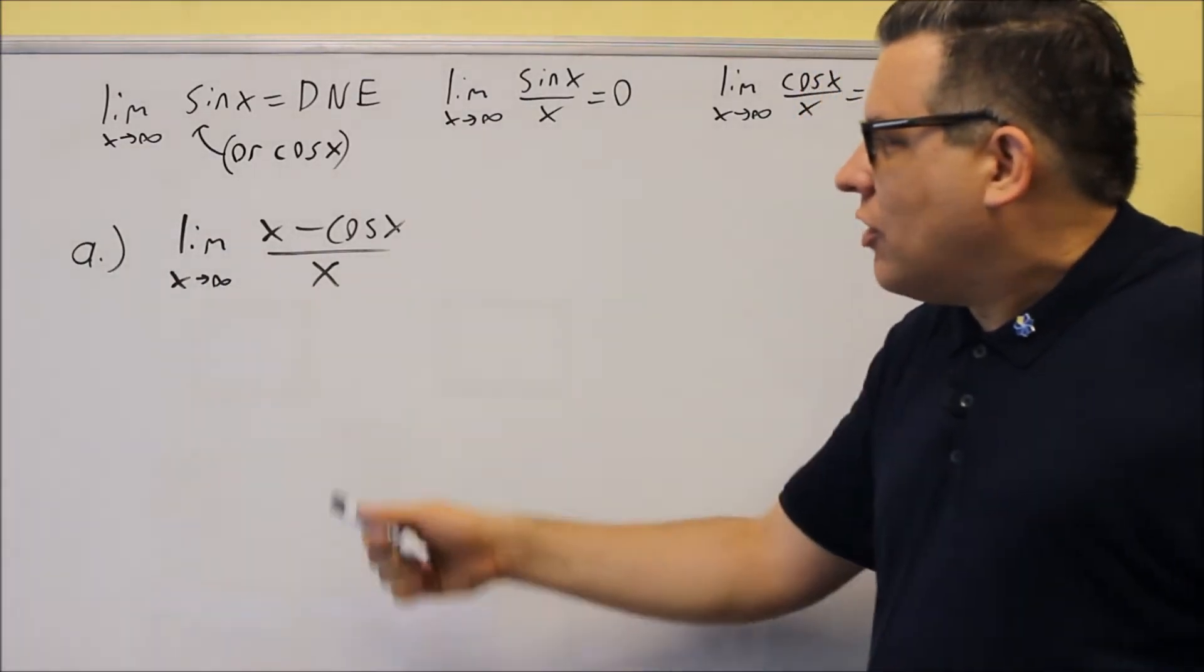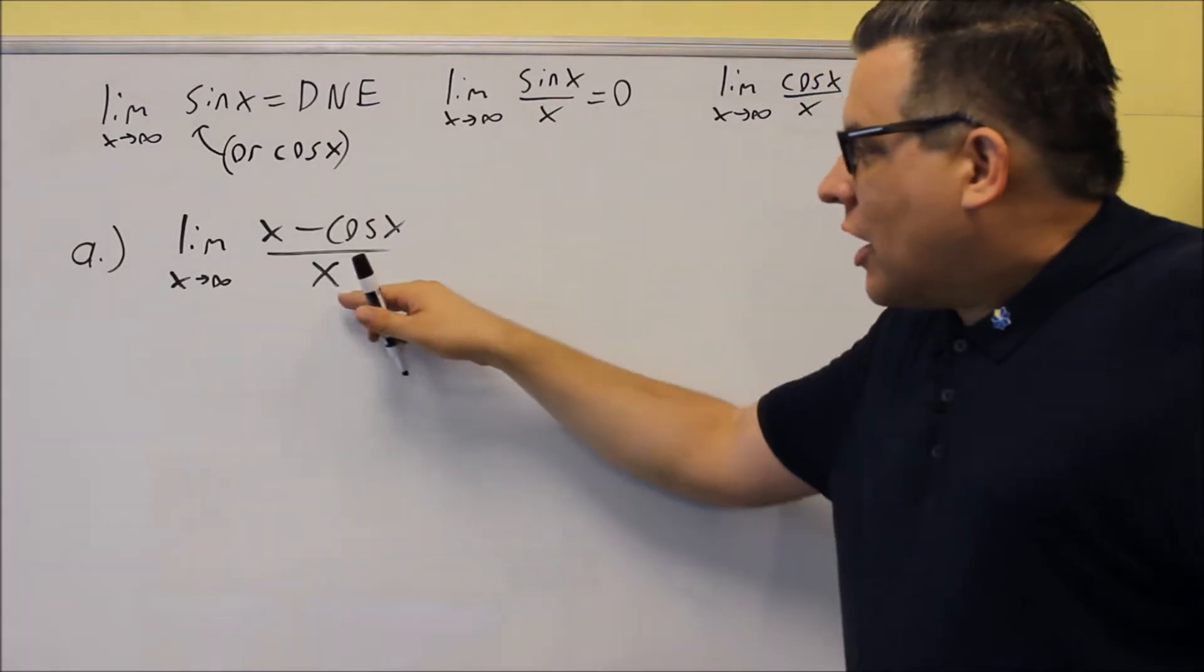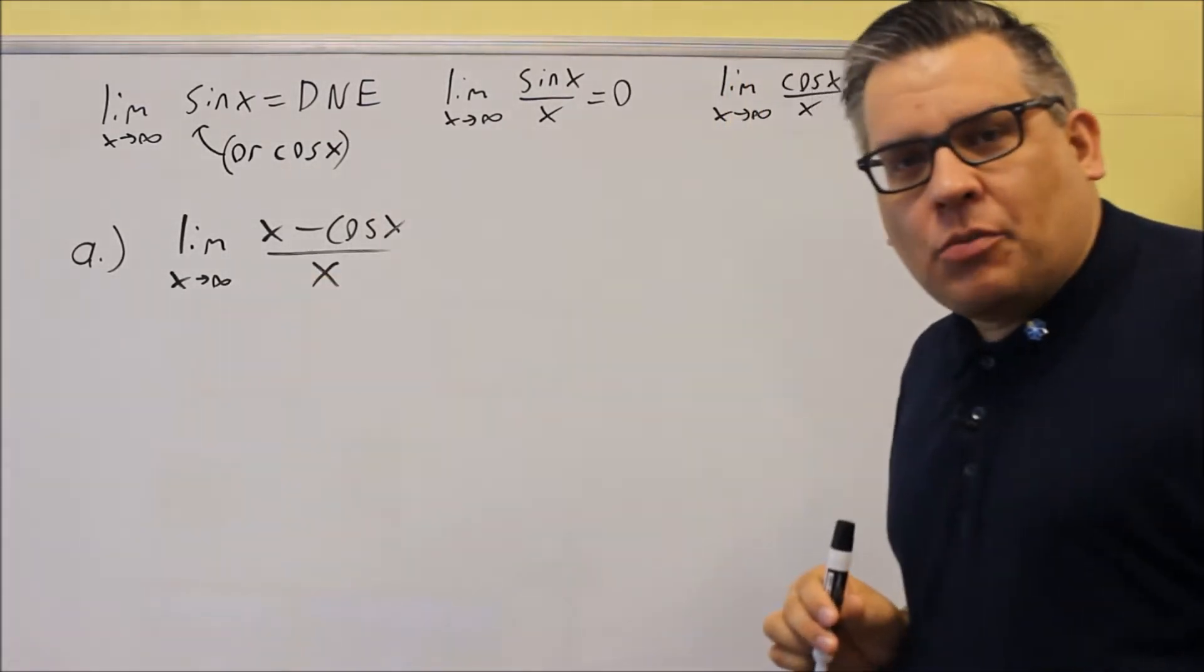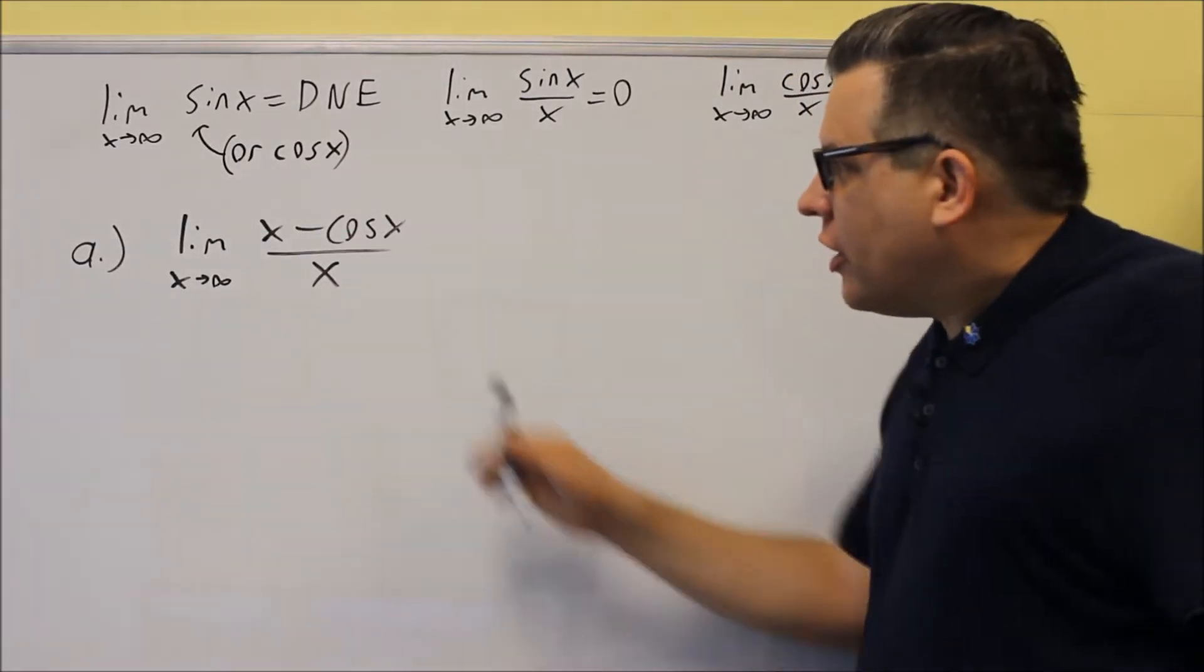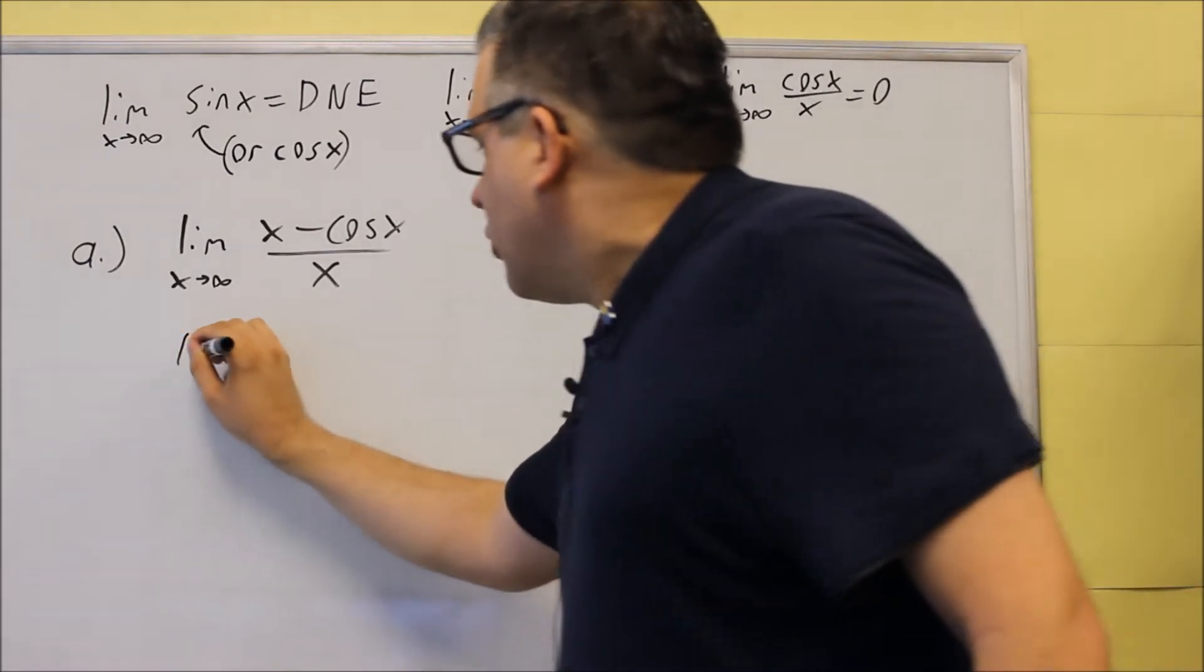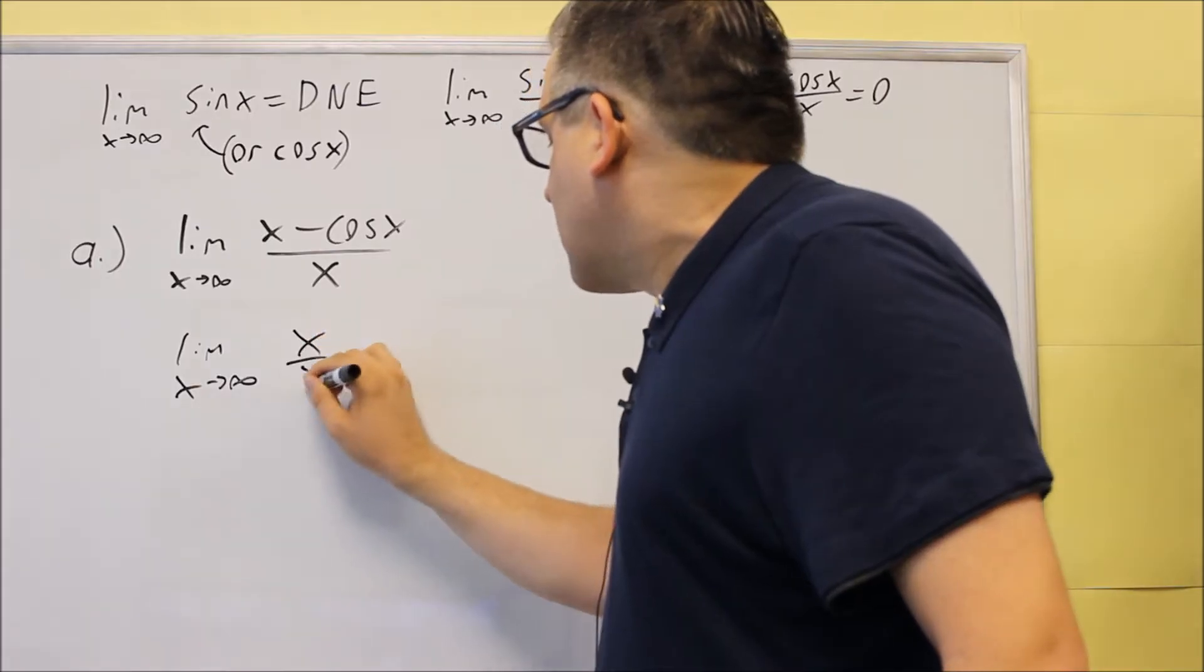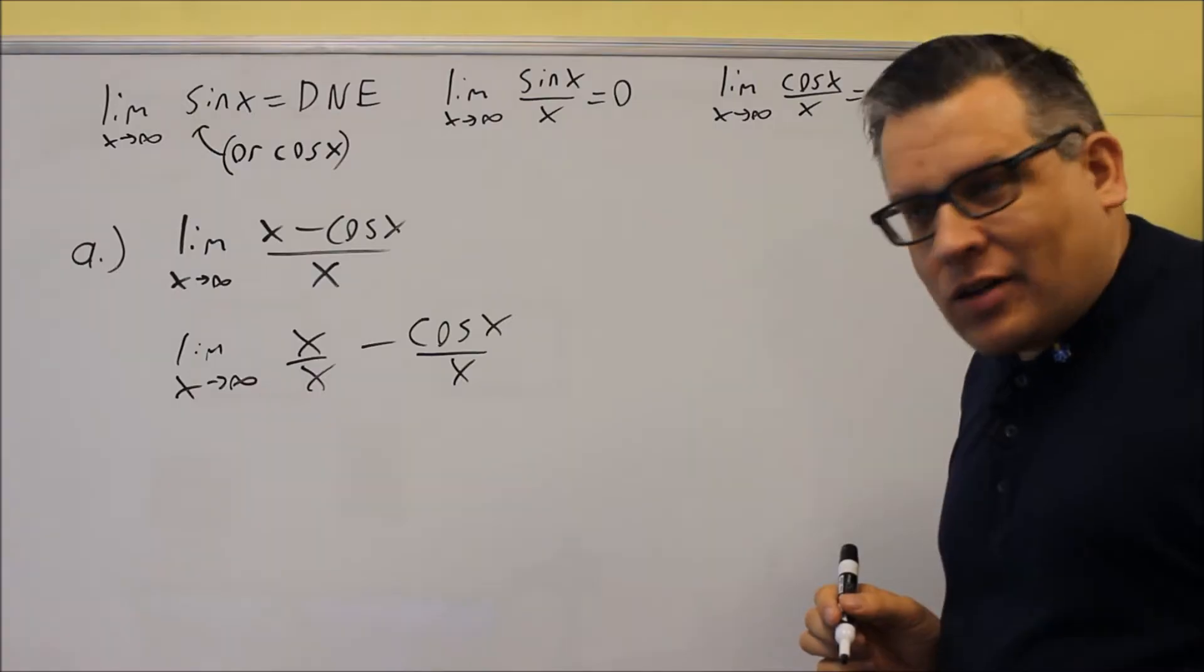We're going to do the limit, x approaches infinity of x minus cosine x over x. So for this one, since there's one thing on the bottom, what we can do is we can break this limit up and we can write it as two separate fractions. So that's what I'm going to do first. We're going to do the limit, x approaches infinity, and I'm just going to separate each of these, divide each of them individually by x.